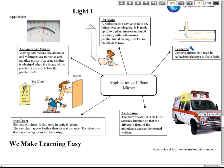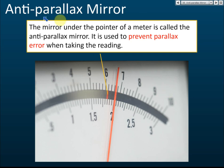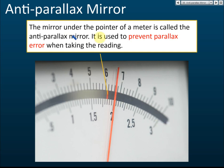The first application of a plain mirror is the anti-parallax mirror. In ammeters, voltmeters, and galvanometers, you can see that there is a mirror under the scale. The mirror under the pointer of the meter is called the anti-parallax mirror.